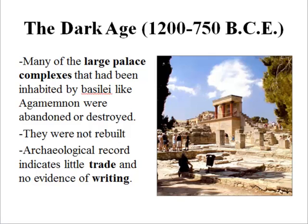Around 1200, things went wrong in Greece. All of what we now think of as Greece was plunged into what we call the Dark Age, which lasted from 1200 to 750 BCE. Many of the large palace complexes, like the one I just showed you, were abandoned or destroyed and were not rebuilt. During this period, our archaeological record indicates very little evidence of trade or writing.